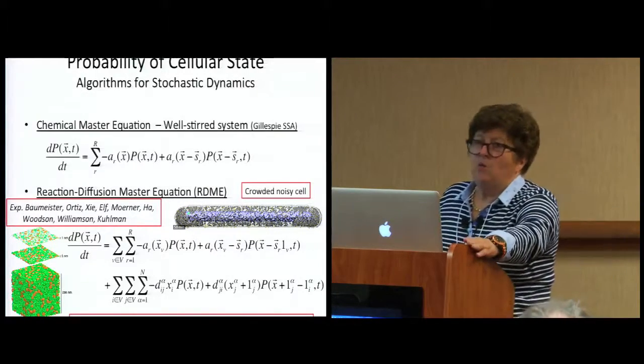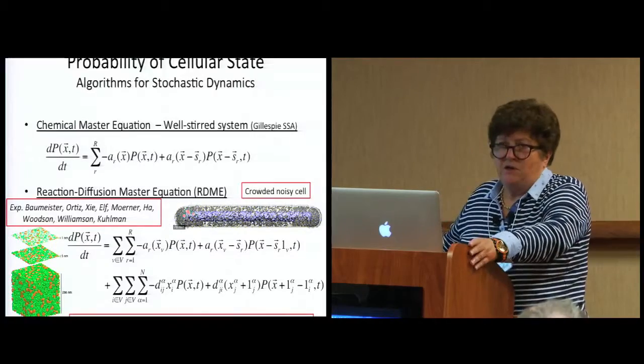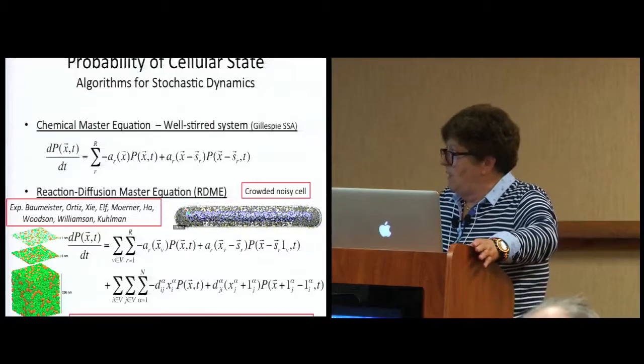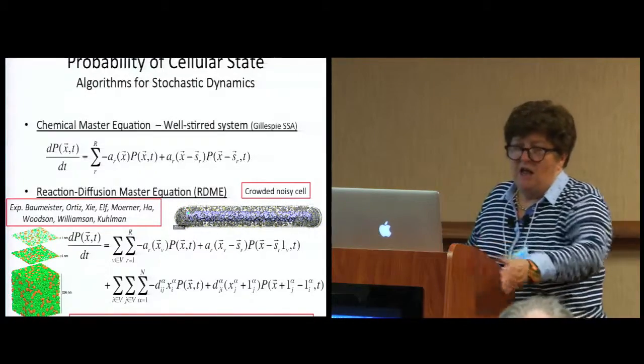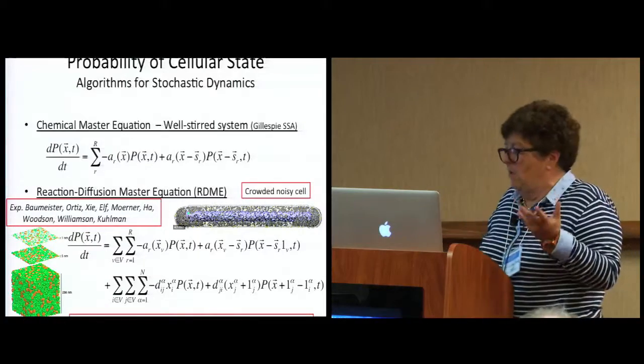Trouble is the cell is anything but well stirred. You see a picture here of a bacterial cell. This is E. coli. You're seeing the architecture. It's very noisy, very crowded. There's a nucleoid region, DNA, there.